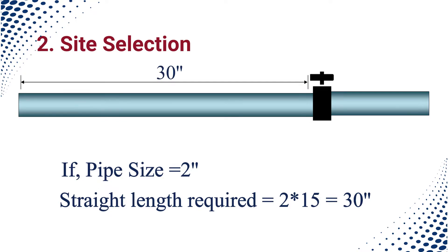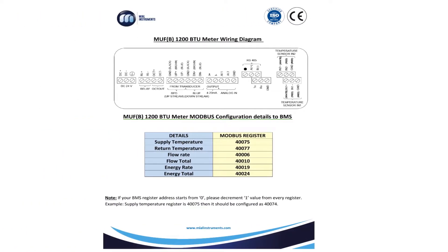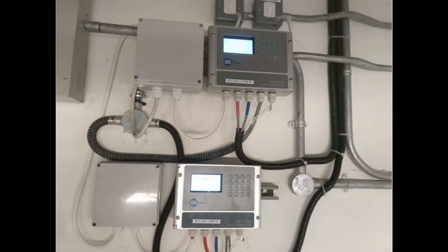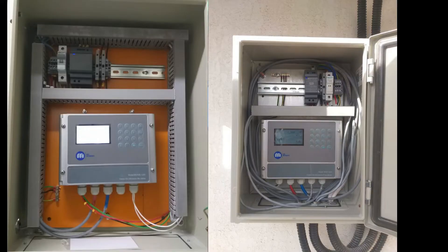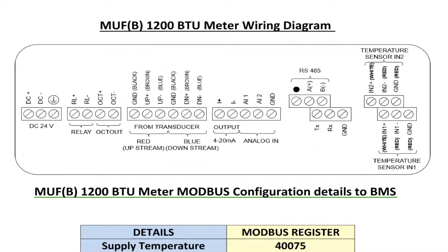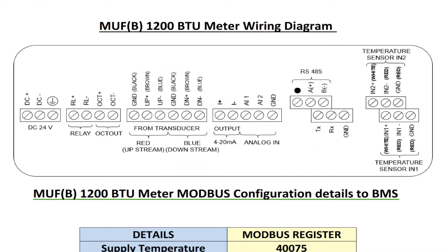Before starting the wiring, bring the wiring diagram from the document envelope and must go through it. You can also download the wiring diagram by scanning the QR code pasted inside the display unit. Fix the transmitter unit near to the site selected for flow sensor installation and wire up the meter as per the wiring diagram. Use a 24-volt DC power supply with proper earth to energize the meter. The next step is transducer installation.